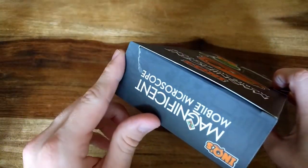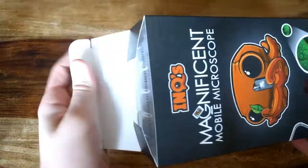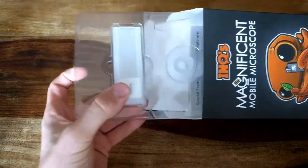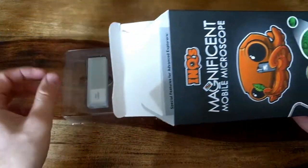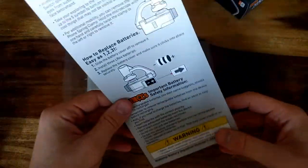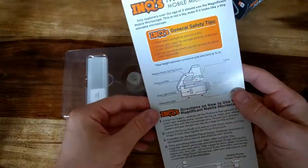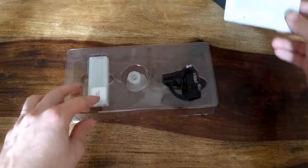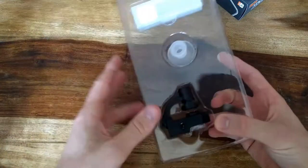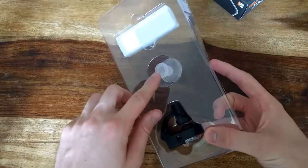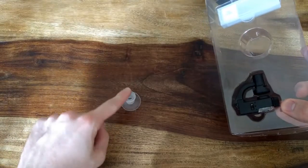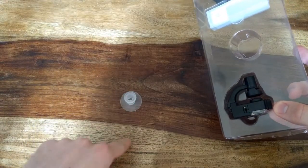Let me pull it out. Let me move the box away, so this is an instruction sheet of what's inside. I already went through it, and this is what you get. This is the microscope itself, this is the stabilizer for the phone, and it has suction.